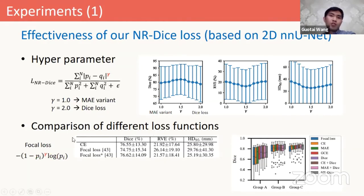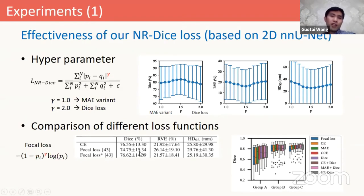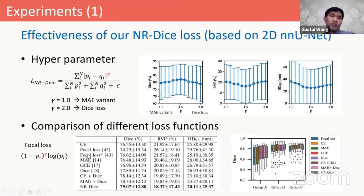To compare our method with other loss functions, we first investigate the focal loss, which also has a hyperparameter gamma, but typically gamma is set to 2 in order to learn from hard samples. But in our case of noisy labels, this will drive the model to fit the noise, so the standard focal loss will have decreased performance. If we change gamma to 0.5, meaning to let the model learn from easier samples, the performance would be better. However, compared with our proposed noise-robust Dice loss, this variant of focal loss still has lower performance. We can see that the proposed Dice loss outperforms the standard Dice loss, and it is also better than a combination of cross-entropy and Dice, which is commonly used by many segmentation works.